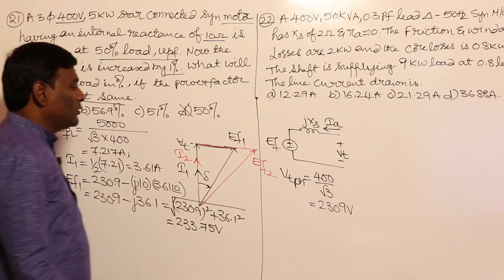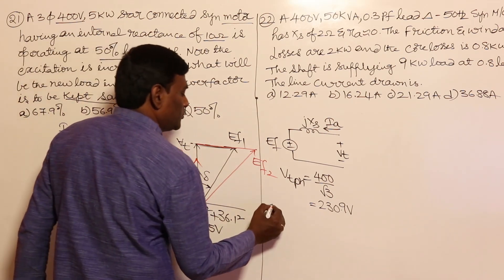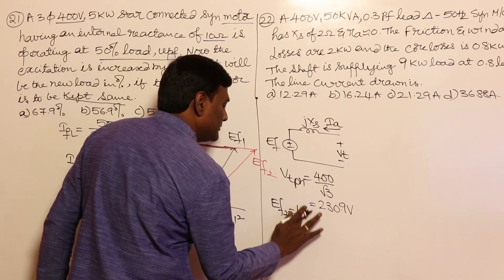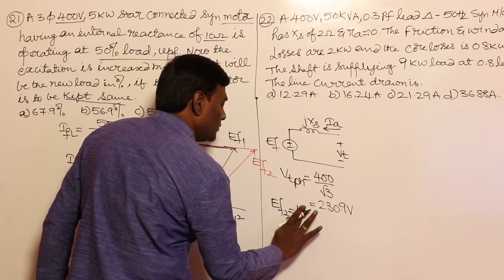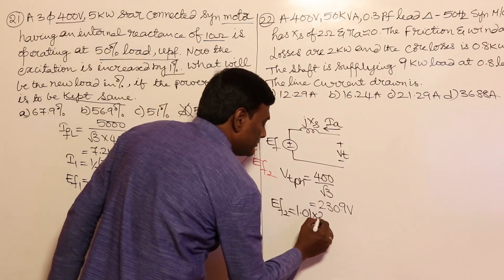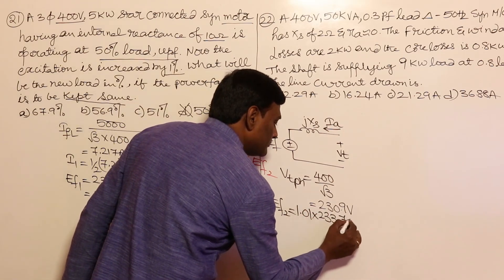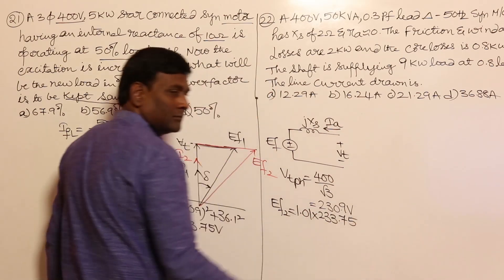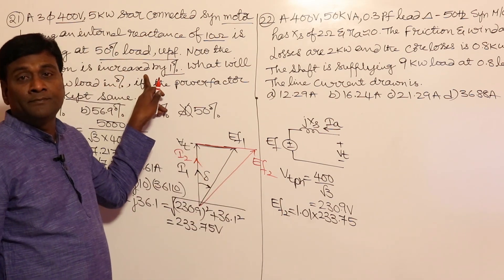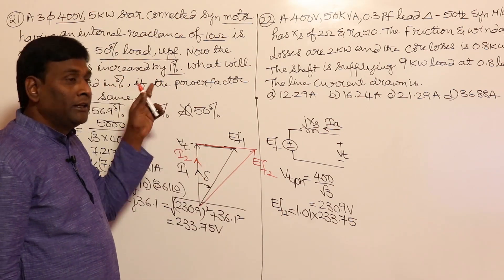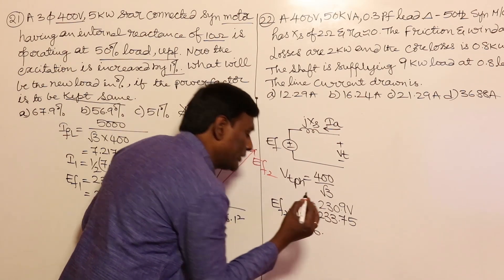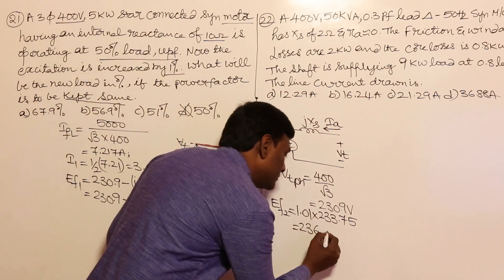Now Ef2 is one percent more than Ef1: Ef2 = 1.01 × 233.75 = 236.09 volts.